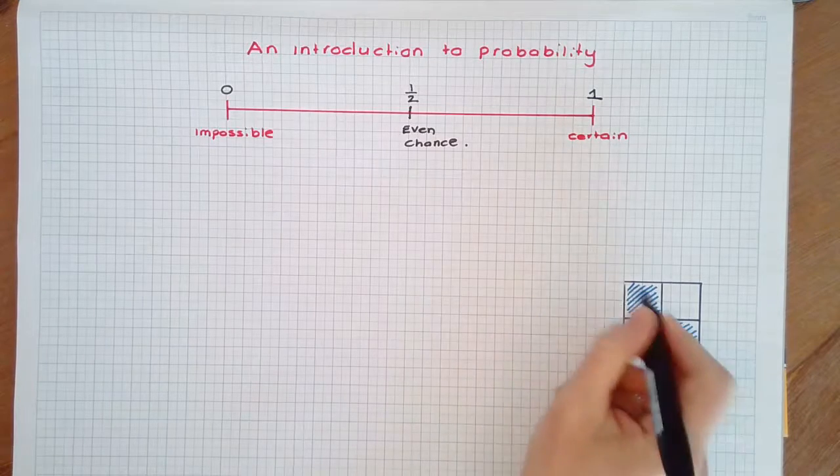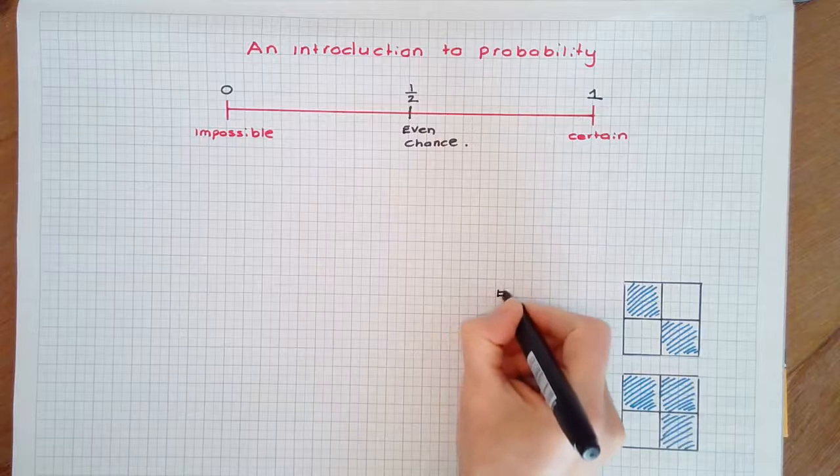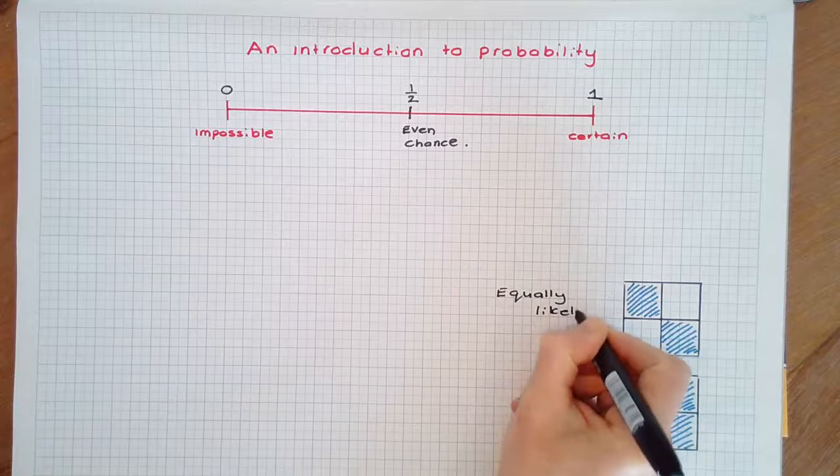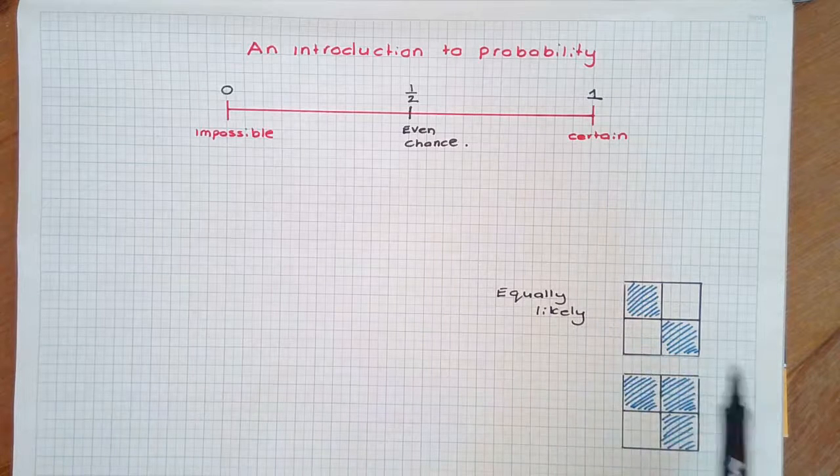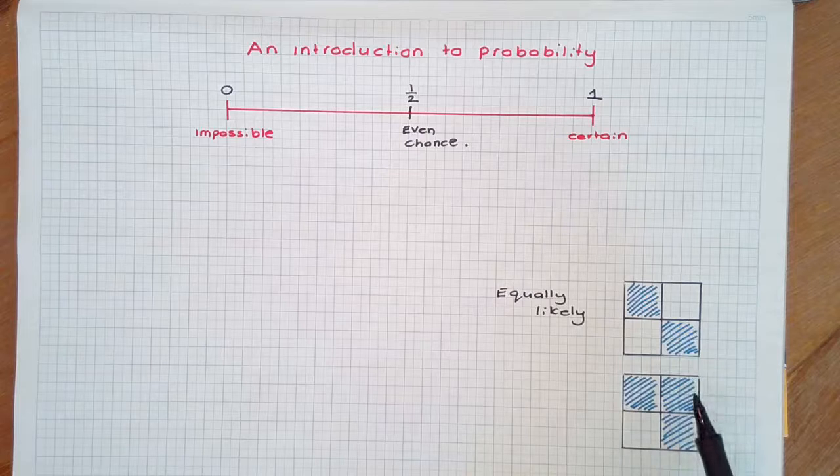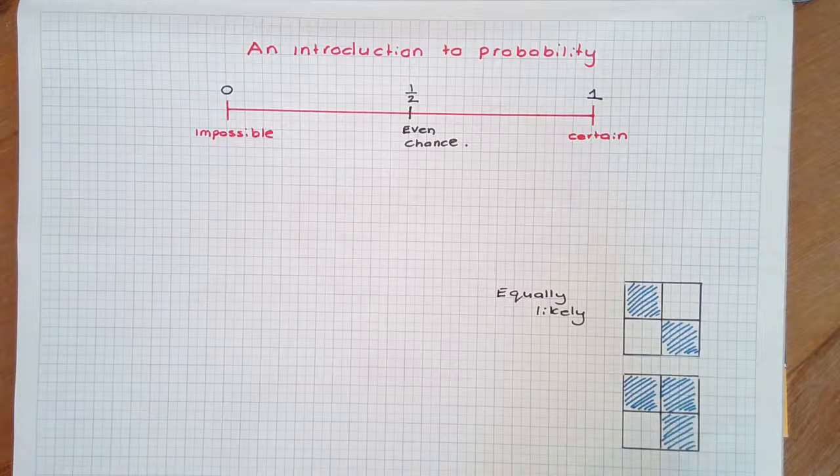For example, in Board 1 there is an equal chance of selecting a shaded square, that is one half. We say that the outcomes are equally likely.